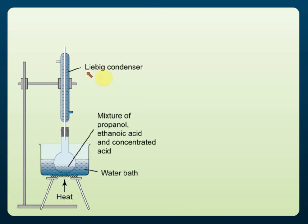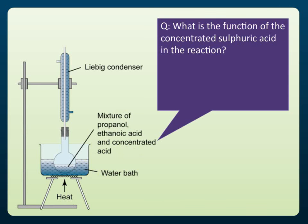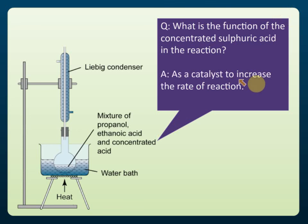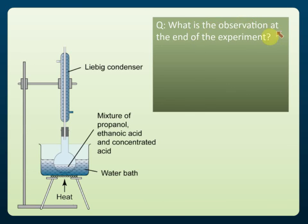We use reflux to prevent alcohol from escaping. The set-up uses propanol, ethanoic acid, and concentrated sulfuric acid. The function of the concentrated sulfuric acid is as a catalyst to increase the rate of reaction.